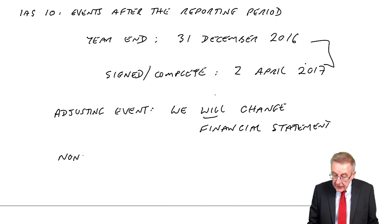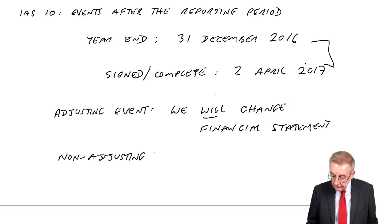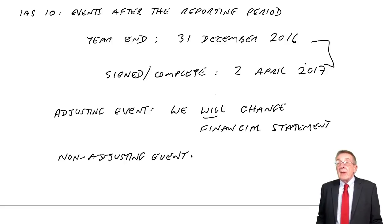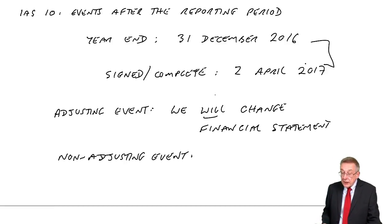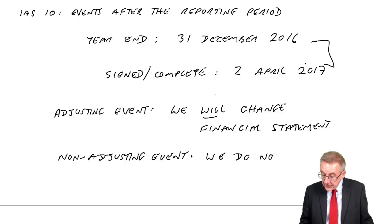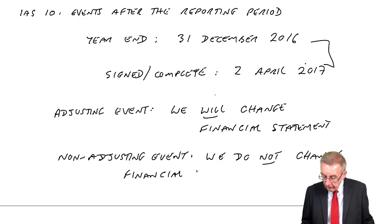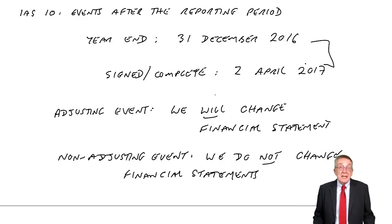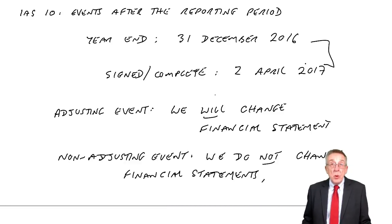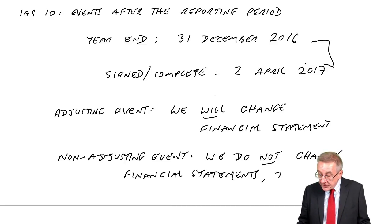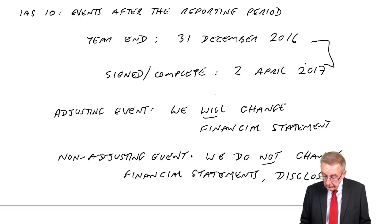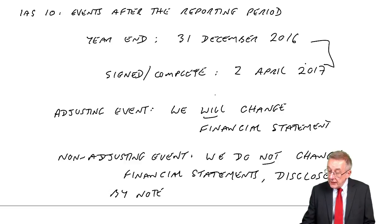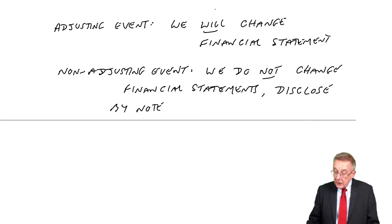However, the other type is a non-adjusting event. In a non-adjusting event, we do not change the financial statements. But if the amount involved is what we call material — if it's big — then we will attach a note to the statements explaining. We disclose by note. That's the expression: attach a little note to the financial statements, disclose by note, if material.